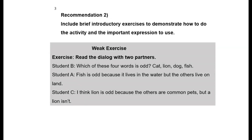Here's a recommendation to include brief introductory exercises to demonstrate how to do the activity and the important expressions to use. To make this more than just identifying the odd word and make it more interactive, after the group members say which word is odd, they must also explain why. For example, student A reads: mountain, river, sea, ocean. Student B says 'mountain is odd' and gives a reason: 'because the others are water.'